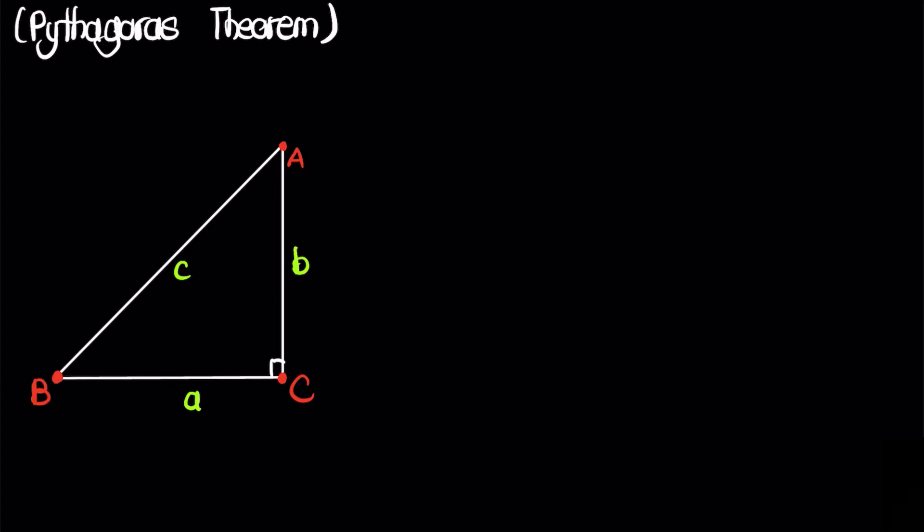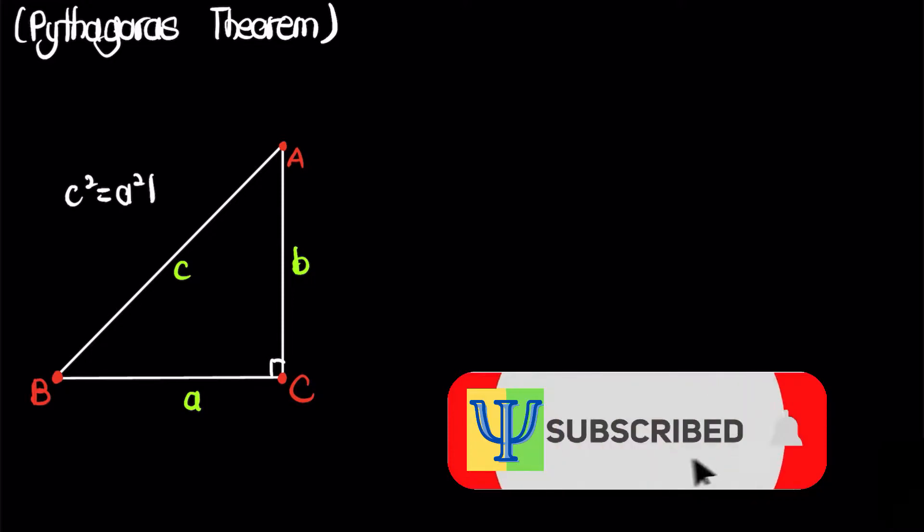As we all know, the famous Pythagorean theorem tells us that in a right-angled triangle, we have that c squared is equal to a squared plus b squared.